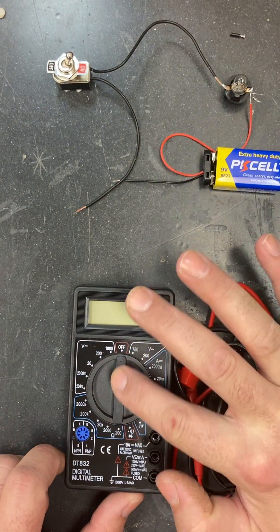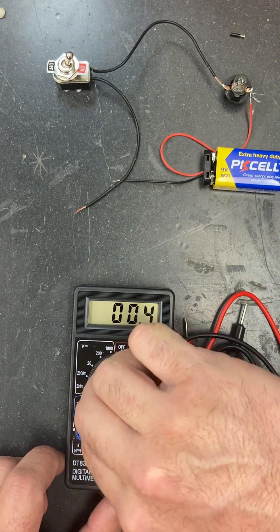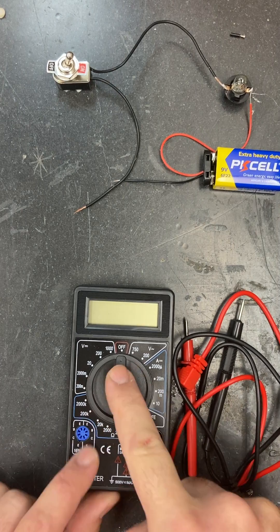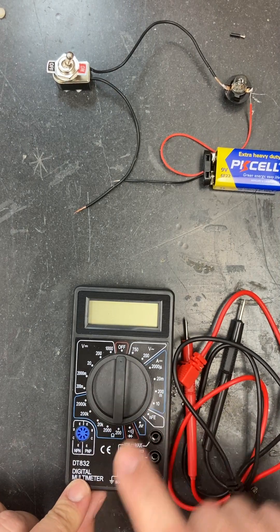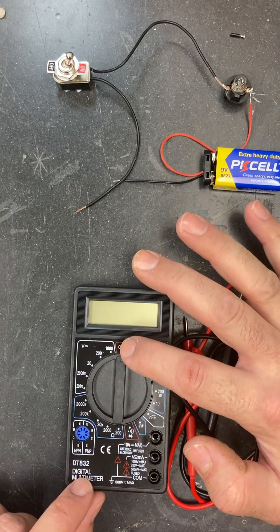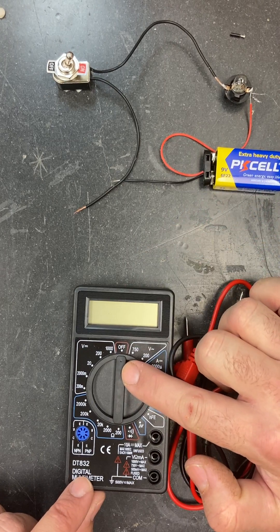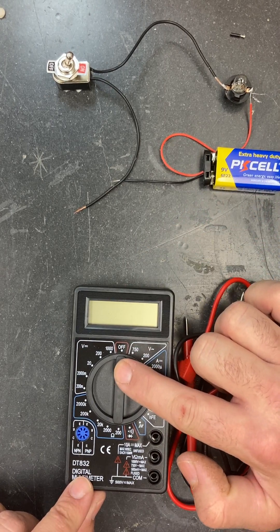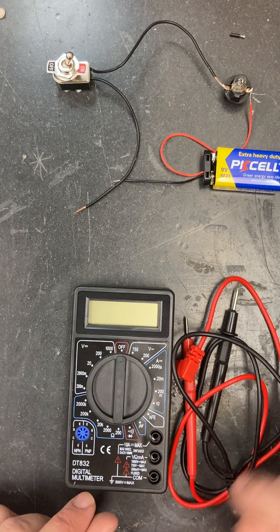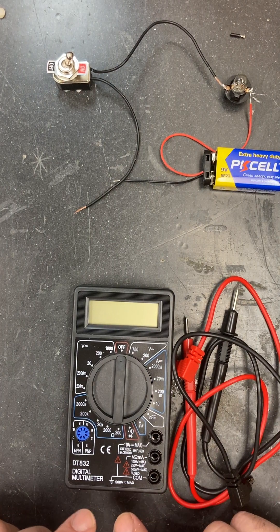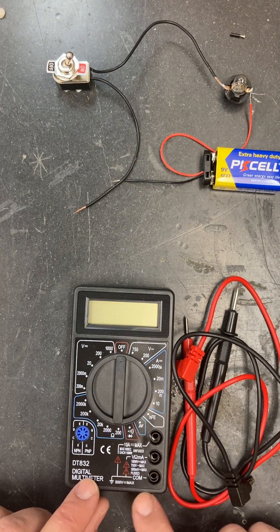Now one thing I want to note is this dial, which is how I select what I want to measure, is currently in the off position. If you have a model that runs on batteries and doesn't have an automatic shutoff, you need to make sure that you always start and end in the off function. You want to preserve that battery as long as you can. No point in wasting it, so always make sure you turn it off when you're done.